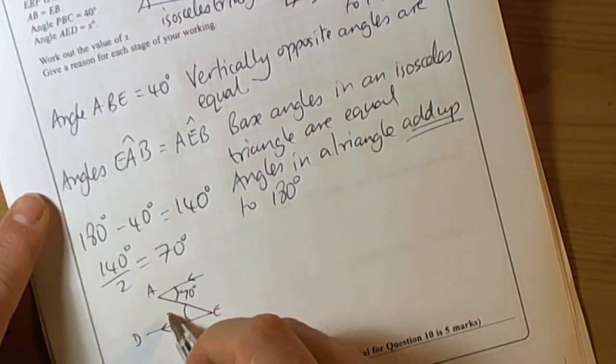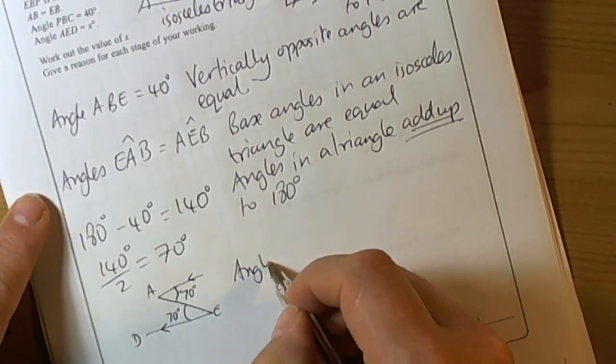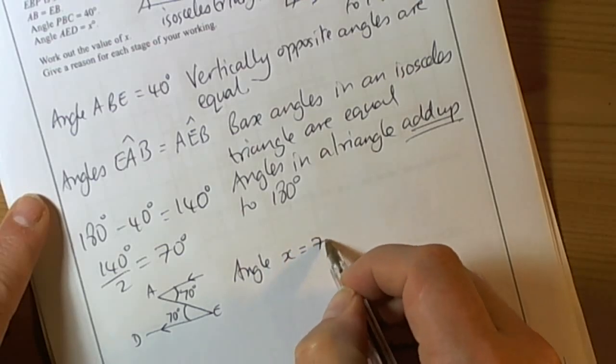So from the alternate angles equal theorem, then we also know that that's 70 degrees, and that's in position of X. So basically angle X equals 70 degrees.